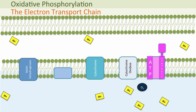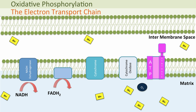Here is the matrix inside the inner membrane of the mitochondrion. Then there is the intermembrane space, and finally the outer membrane of the mitochondrion. These are the electron carriers — they've got different names: there's NADH dehydrogenase, cytochrome, and cytochrome oxidase. What's going to happen is that the NADH and the FADH2 that came from the Krebs cycle, and the NADH that came from the link reaction and glycolysis, are now going to give up their electrons to these electron carriers and go back to their original forms.